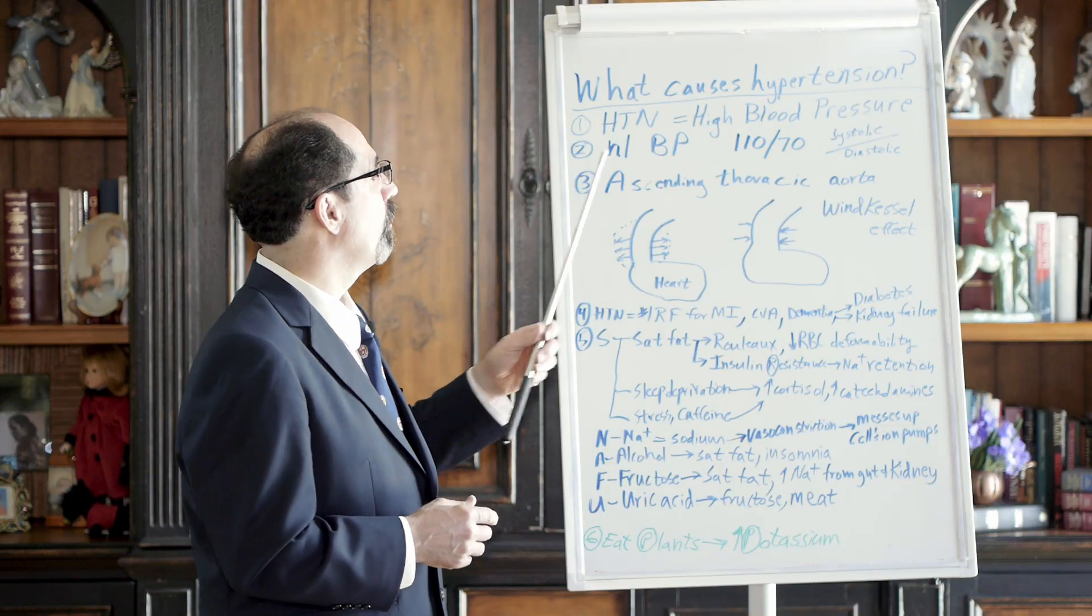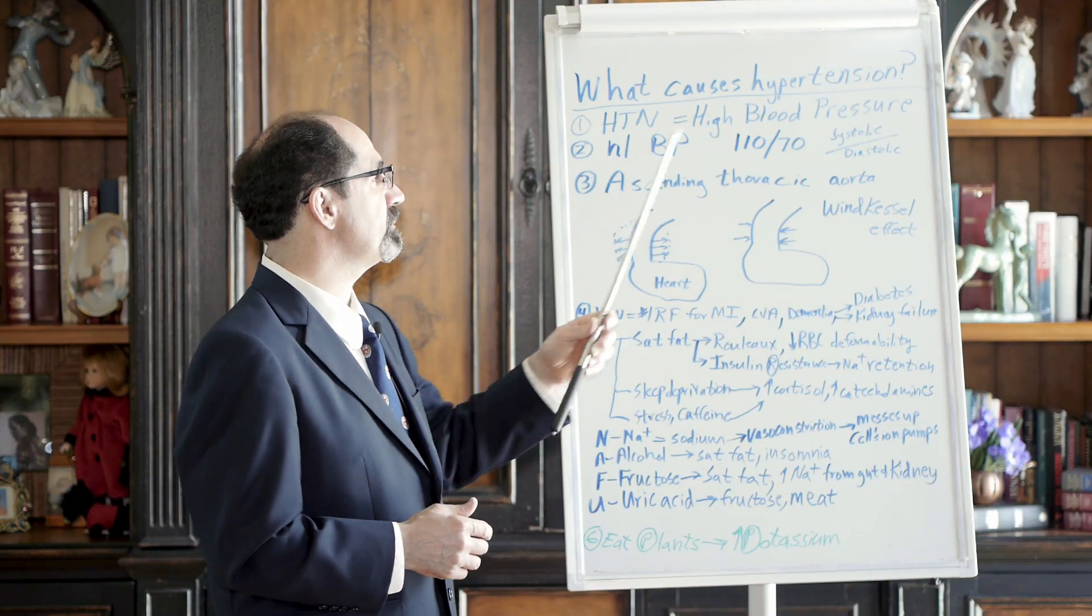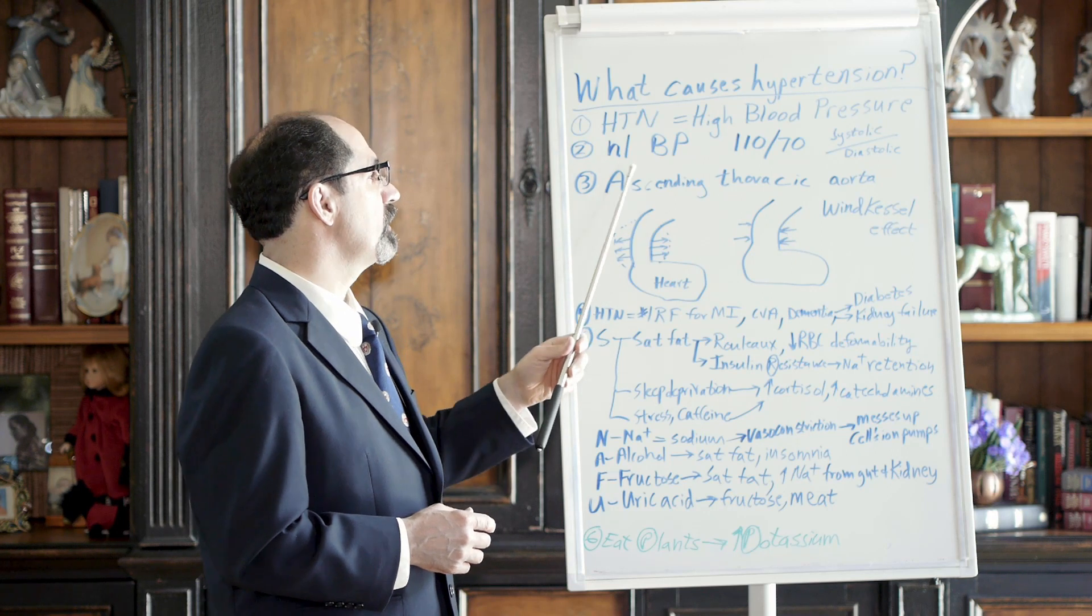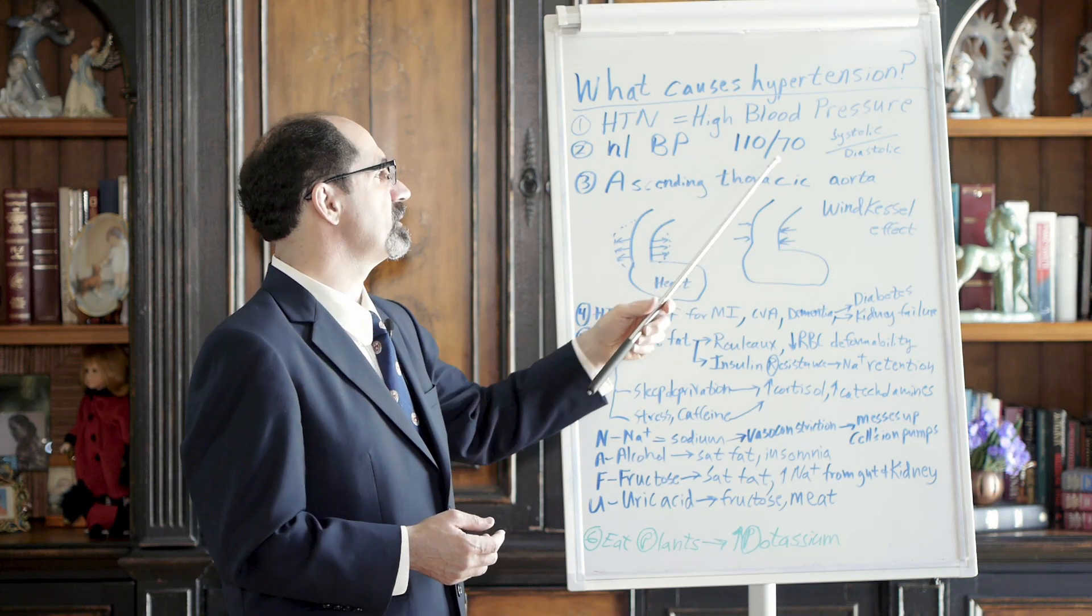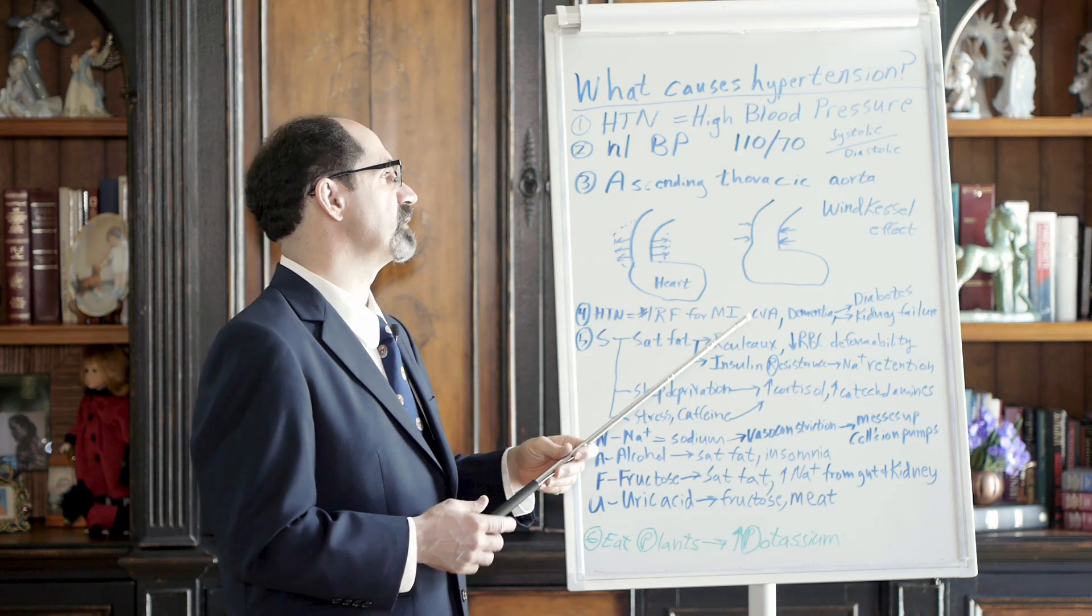Okay, hi. We're going to talk about what causes hypertension. Hypertension means high blood pressure. A typical normal blood pressure would be something like 110 over 70. That's a really good blood pressure.